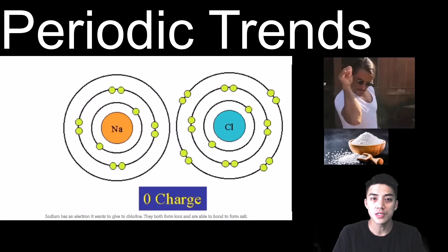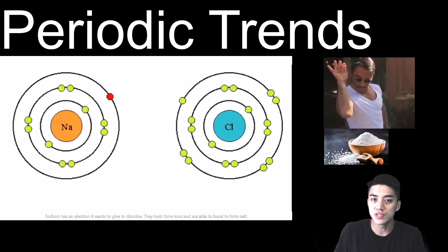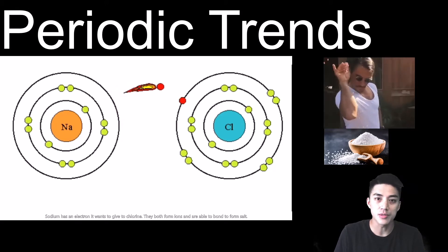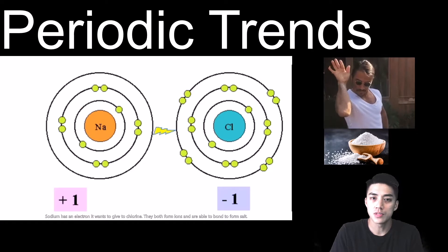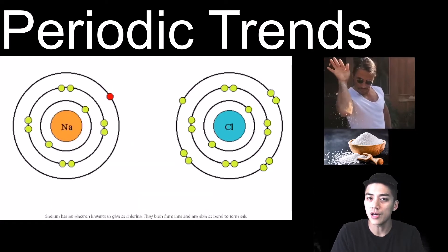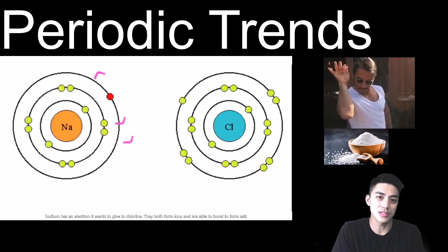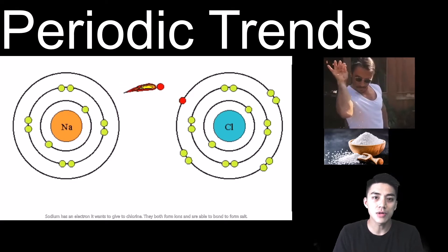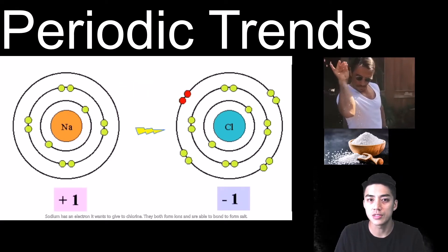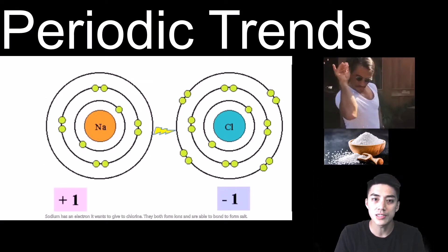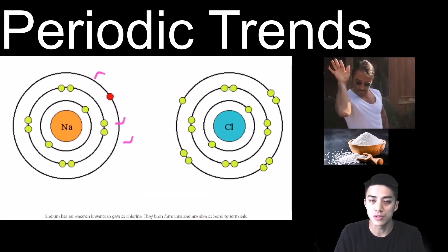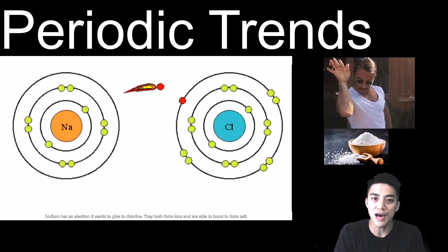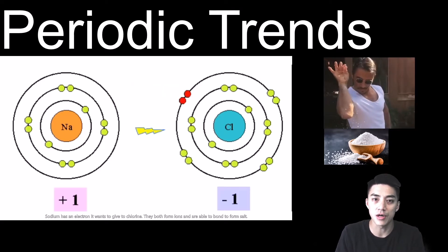You've been told many times that sodium gives up its electron to chlorine and together they bond ionically to make salt. But you've never really been explained the reason why. How come sodium is the one giving up the electron and not the other way around? How come chlorine doesn't give up the electron? Today we're going to study something called periodic trends, which will help you understand why certain elements on the periodic table tend to lose electrons. These are just patterns we tend to see on the periodic table.